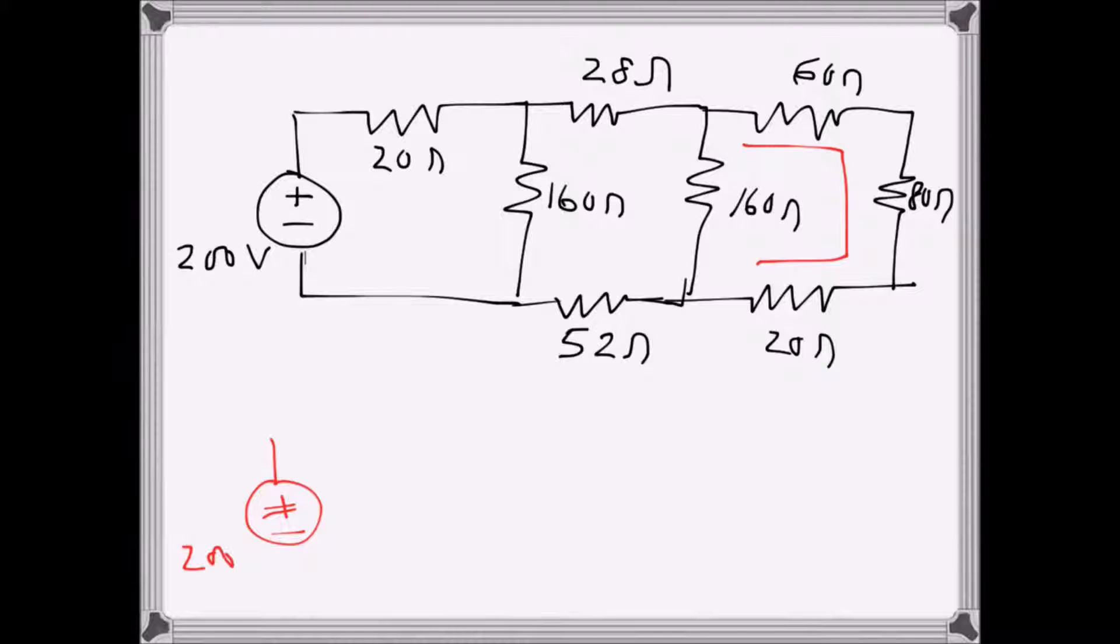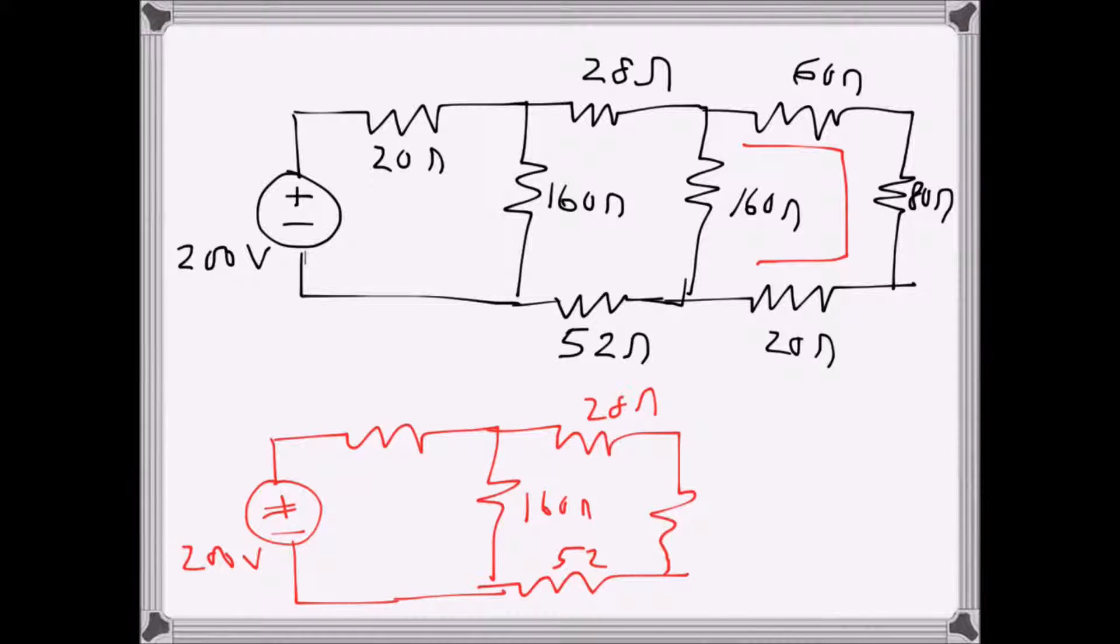Because this part remains unchanged. So up to there everything is the same: 160 ohms, 28 ohms, 52 ohms, 2 ohms, and then 160 ohms. This is 20 ohms. Now 60, 80, 20 is 160, so there is 160 ohms there. Now we have two 160s in parallel.